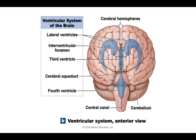There is one lateral ventricle in each cerebral hemisphere and they lead into the third ventricle through the interventricular foramen. From the third ventricle, it leads into the fourth ventricle through the cerebral aqueduct, and then from the fourth ventricle it leads into the central canal of the spinal cord.